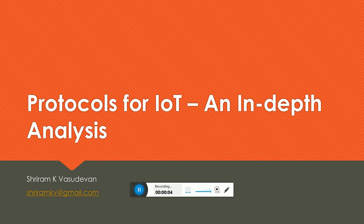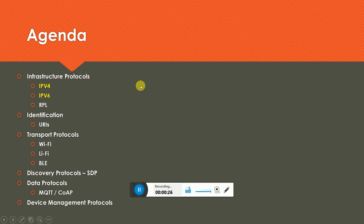Welcome back. We have started talking about IoT-related architecture and have demonstrated certain demos and practical applications. Now it's time to understand the infrastructure and related protocols involved in building an IoT application. My plan is to cover infrastructure protocols, identification protocols, transport, discovery, data protocols, and device management protocols. This chapter will give a complete understanding from the protocol aspect; the next chapter will cover cloud interfacing.